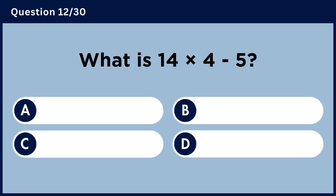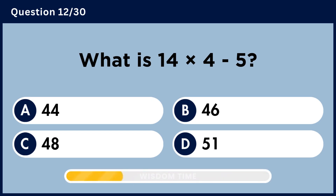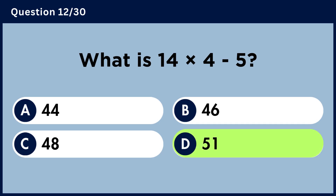What is 14 multiplied by 4 minus 5? Answer D, 51.